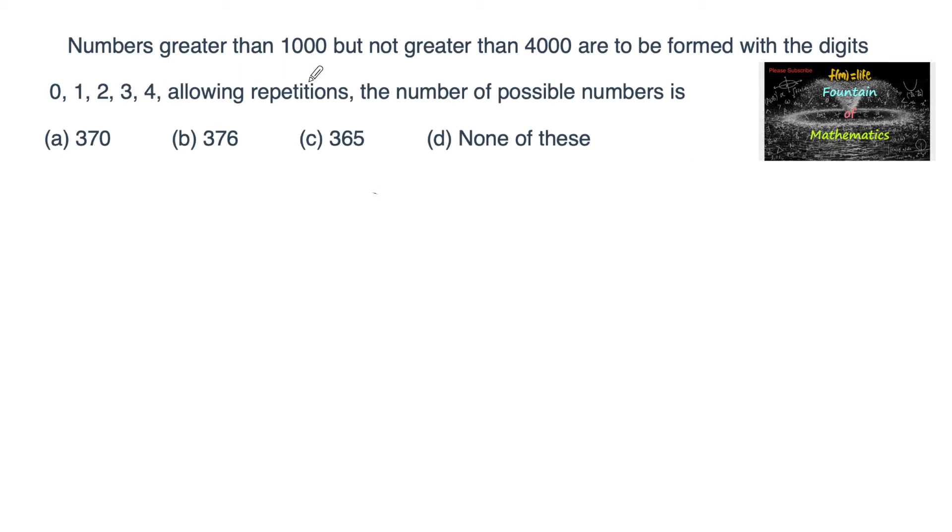Numbers greater than 1000 but not greater than 4000 are to be formed with the digits 0, 1, 2, 3, 4, allowing repetitions. The number of possible numbers is?